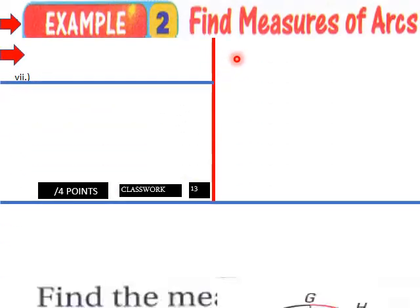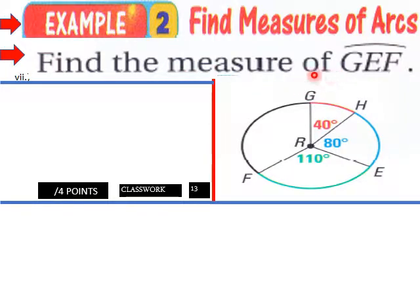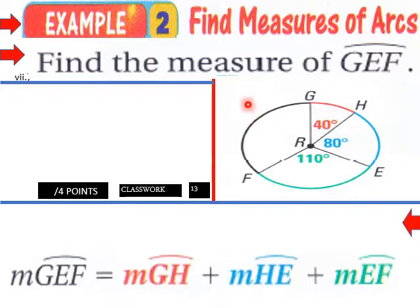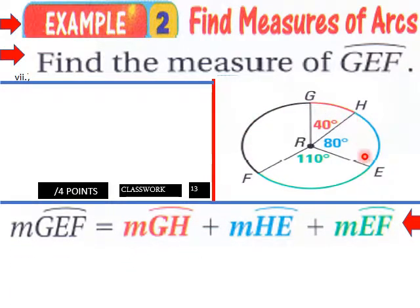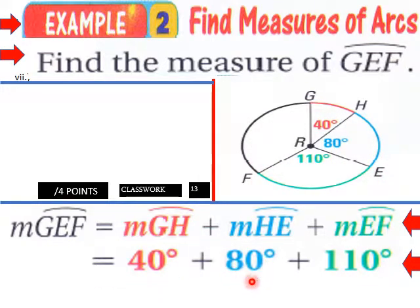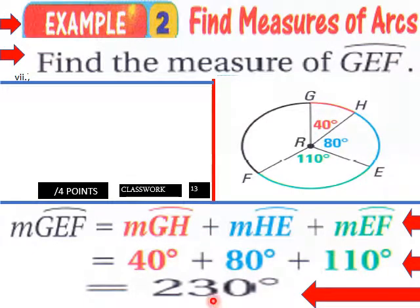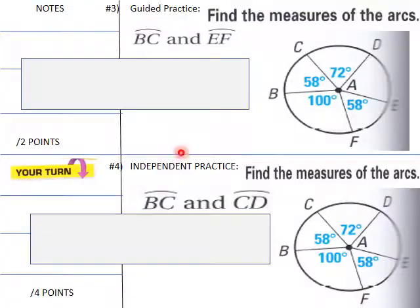Let's find arc measures using an example. The measure of arc GEF equals the measure of arc GH plus the measure of arc HE plus the measure of arc EF — three arcs added together. That gives us 40 plus 80 plus 110, so the measure of arc GEF is 230 degrees.